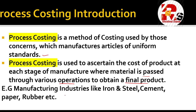Examples of industries where process costing is used include iron and steel, cement, paper, rubber, and similar manufacturing industries. In these industries, process costing plays an important role because in every different process, a product or final product is formed. The output of one process becomes the input of the next process, and this procedure carries forward until you finally get finished goods.